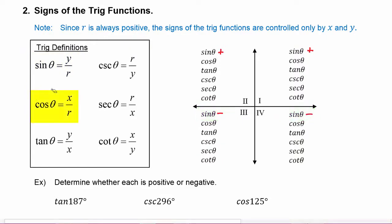Cosine theta is defined to be x over r. Again, r is always positive, so cosine will be positive whenever x is positive — in quadrants one and four — and cosine theta will be negative whenever x is negative, which is in quadrants two and three.